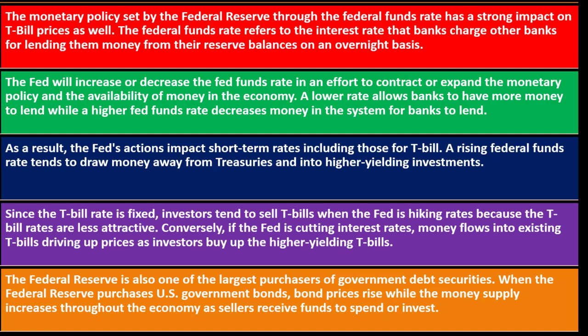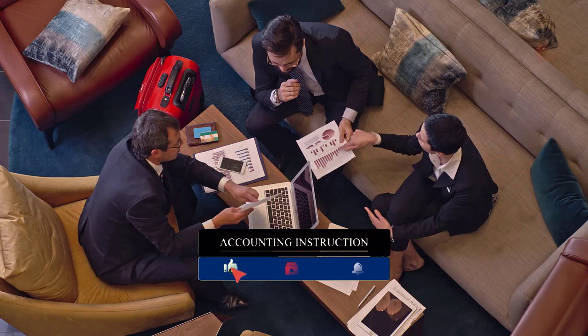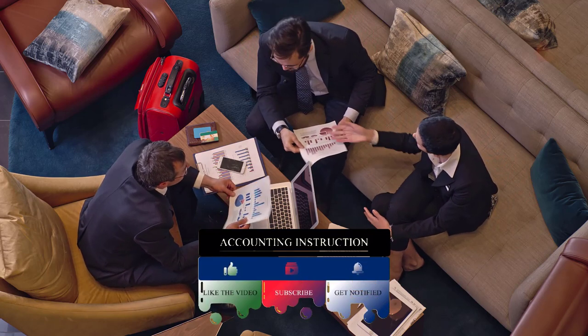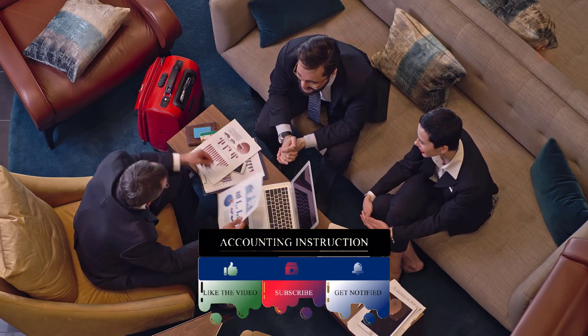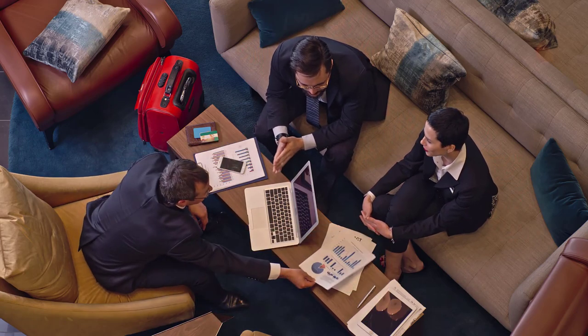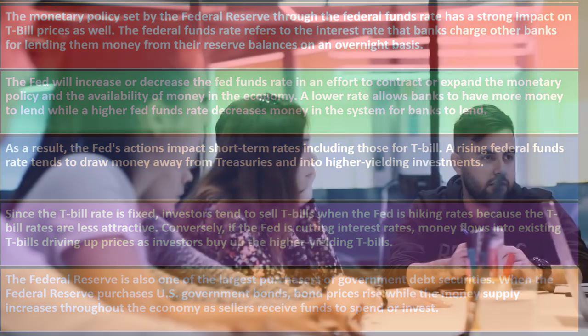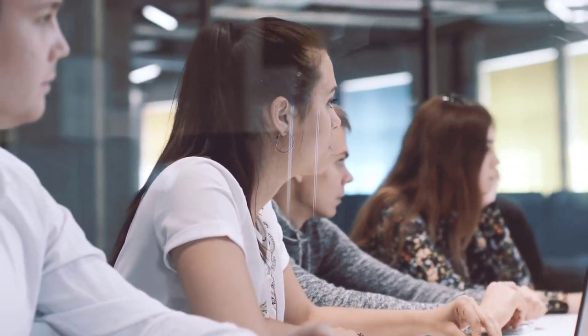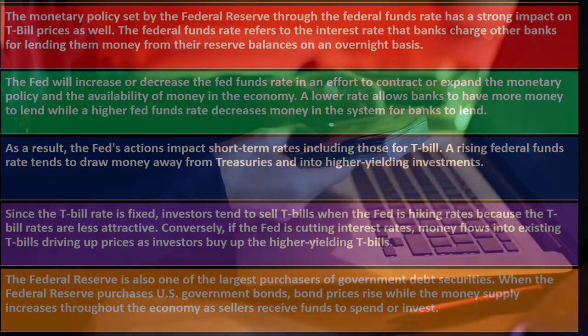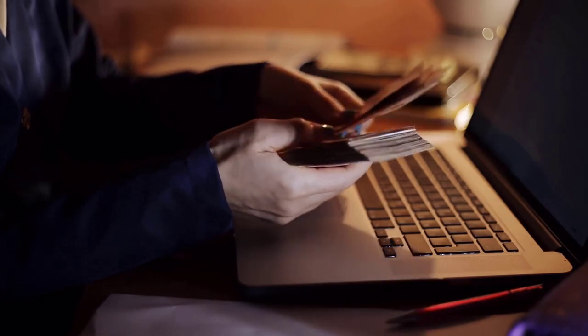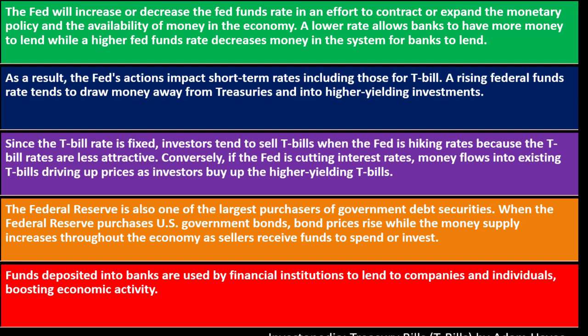The Federal Reserve is also one of the largest purchasers of government debt securities. When the Federal Reserve purchases U.S. government bonds, bond prices rise while the money supply increases through the economy as sellers receive funds to spend or invest. The government can purchase back their own T-bills on the market — they've already issued the T-bills and buy them back, which puts more money back into the economy by giving money to investors at that point in time, stimulating the economy. Funds deposited into banks are used by financial institutions to lend to companies and individuals, boosting economic activity.